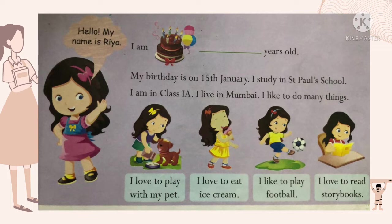Hello, my name is Riya. I am dash years old — here in this blank you can write six. Take out your pencil and write six. My birthday is on 15th January — Riya ka janam din 15th January hai. I study in St. Paul's School — Riya ki school ka naam St. Paul's School hai. I am in class 1A — Riya pehli A mein padhai karti hai. I live in Mumbai — Riya Mumbai mein rehti hai.